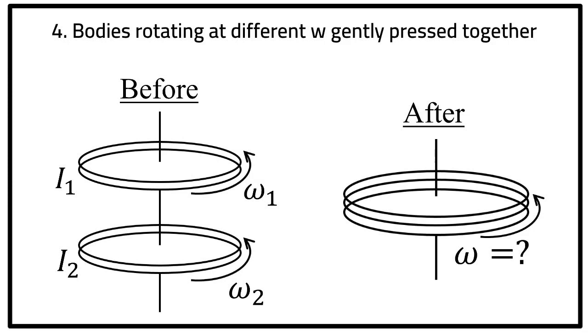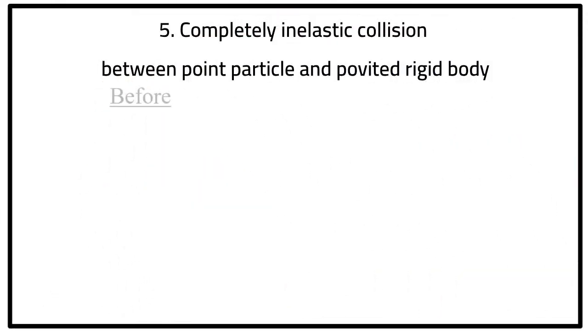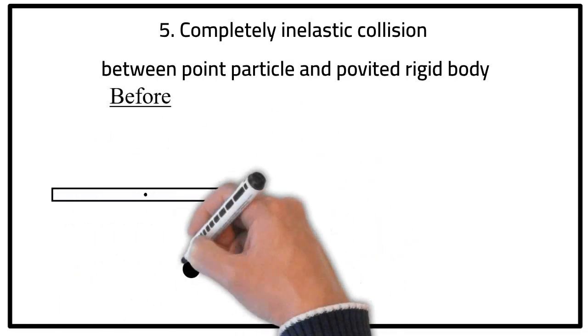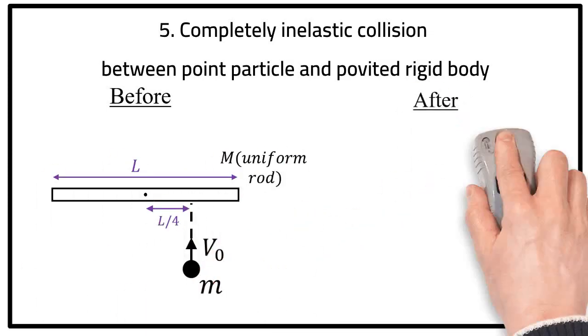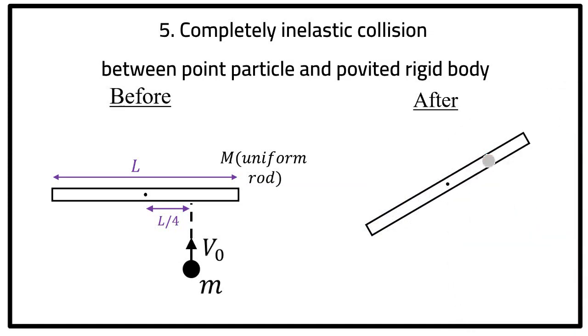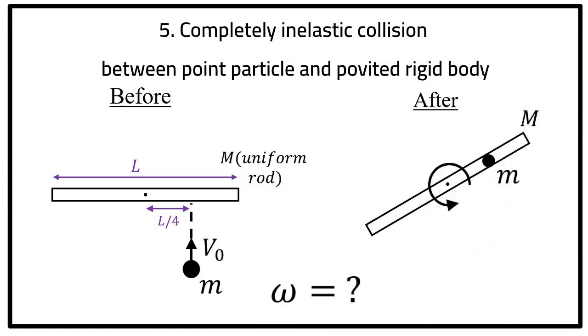Now let's talk about scenarios where you have a completely inelastic collision between a rigid body that is hinged at some point and a particle moving at some velocity. So after the collision, the particle sticks to the rigid body and both rotate at the same angular speed. Once again, the collision forces are internal and as such will not affect the angular momentum of the rigid body and the particle system.